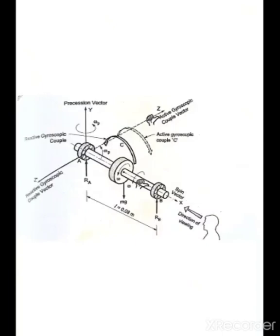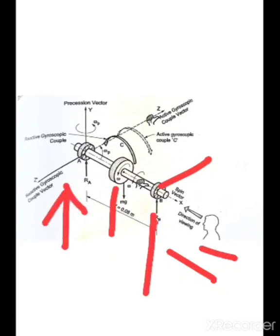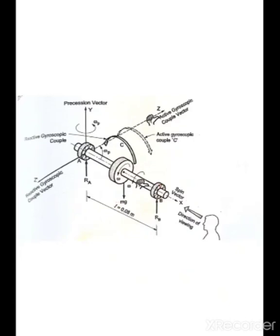Now let's discuss the problem in detail. The disc is rotating in the anticlockwise direction on the axle, which is mounted with two bearings at each end. You are viewing the disc from the right hand side bearing. We need to find the reaction at bearing A and bearing B, and what is the effect of the reactive gyroscopic couple. The disc is rotating in anticlockwise direction, so the spin vector is moving in the outward direction. The reactive gyroscopic couple vector acts in this direction, and opposite to that is the active gyroscopic couple.